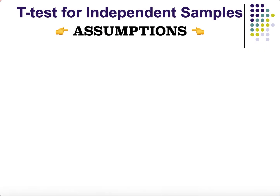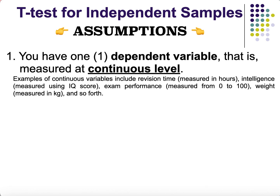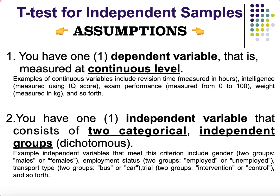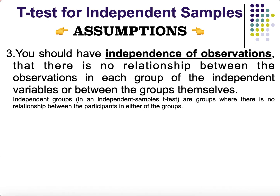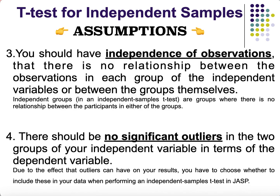The assumptions of the independent samples t-test are: first, there should be a single dependent variable that is continuous, such as time, exam performance, intelligence, or weight. Second, you should have one independent variable consisting of exactly two categorical independent groups — it must be dichotomous, like sex (male or female) or employment status. Third, there should be independence of observation — no relationship between participants in either group.